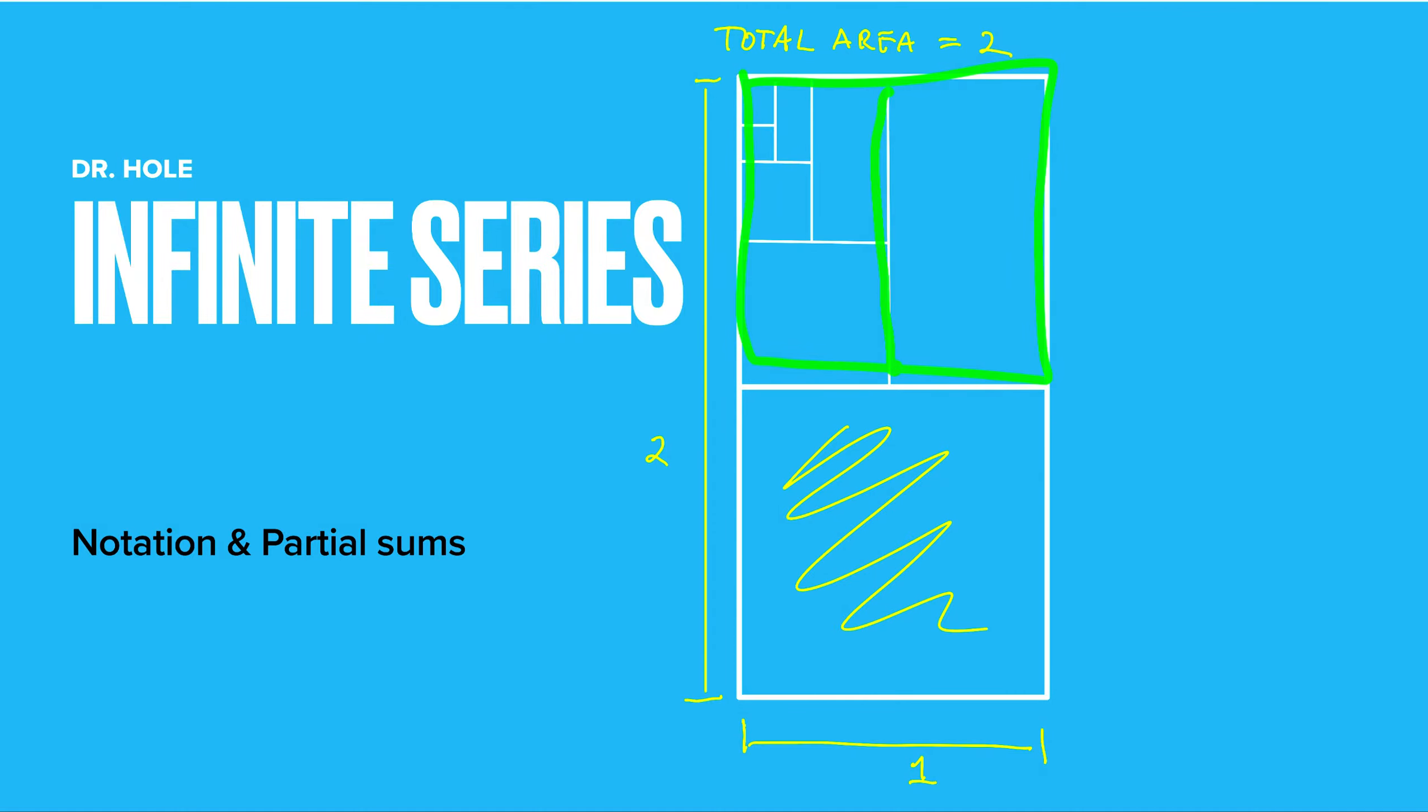Divide that total area in 2 and shade one half. And repeat. Whatever is remaining, divide it in 2 and shade one of the halves. Whatever remains, divide it in 2, shade one of the halves.